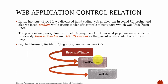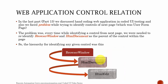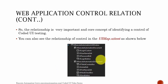So, web application control relationships. In the last part — part 15 — we discussed hand coding web application in Coded UI testing, and we faced some problems while trying to identify a control on the next page, which was the user form page. The problem was every time while identifying a control from the next page, we needed to re-identify the browser window and HTML document as a parent of the control within the page. The hierarchy of identifying any given control was: to identify an HTML edit control, the parent was HTML document, and the parent of HTML document was a browser window. This relationship is very important and is the core concept of identifying a control in Coded UI testing.